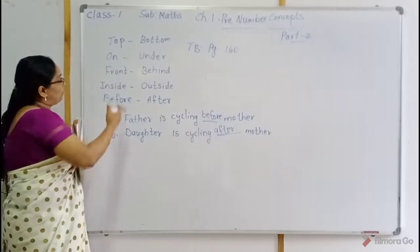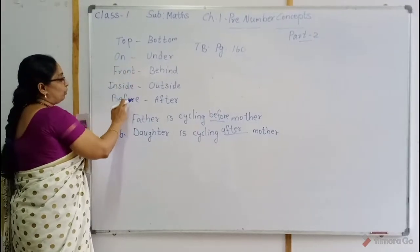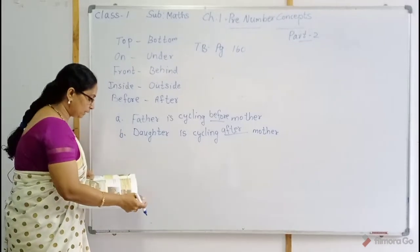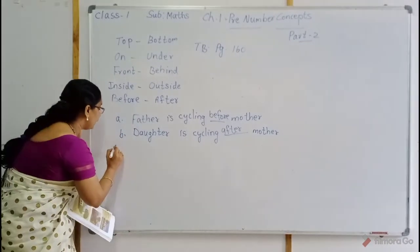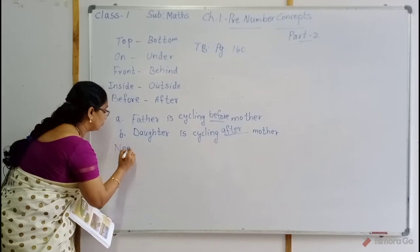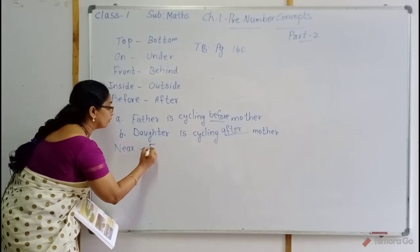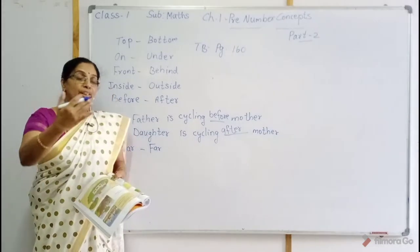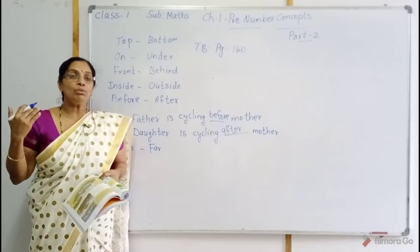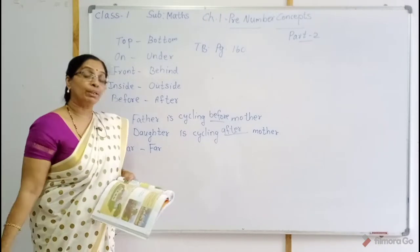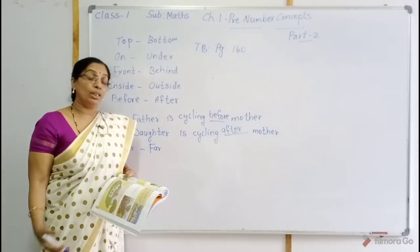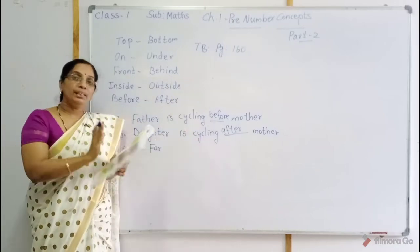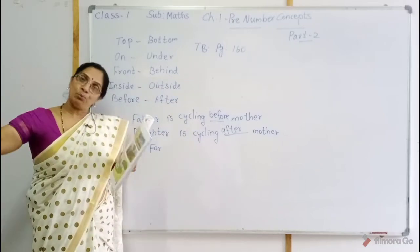Now we have completed five concepts. The next concept is near and far. Near, far. We are near to the school, and we are far from the school. Near, far.